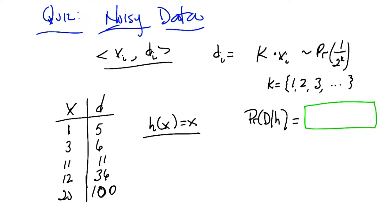So, all right, so in a world where this is the hypothesis that actually matters, we're saying that x comes in, the hypothesis spits that same x out, and then this noise process causes it to become a multiple, and the probability of a multiple is this 1 over 2 to the k.